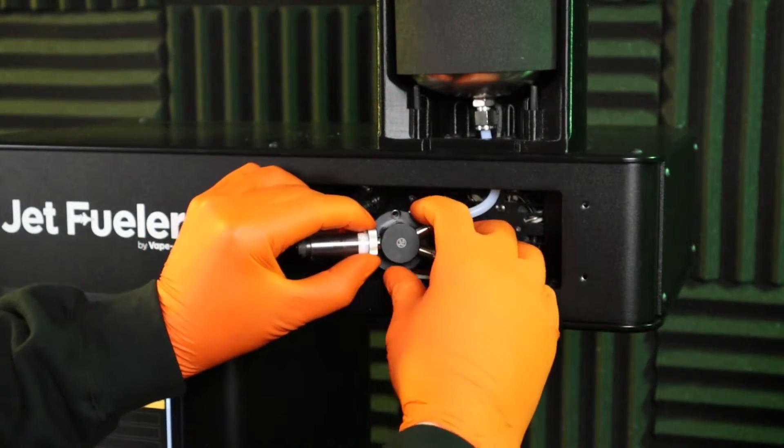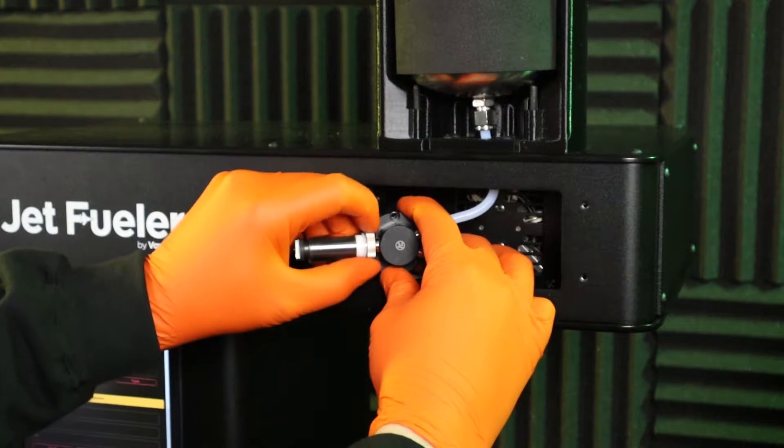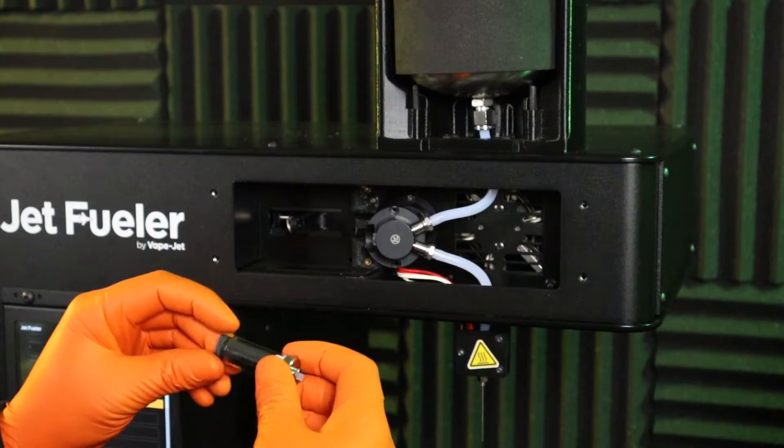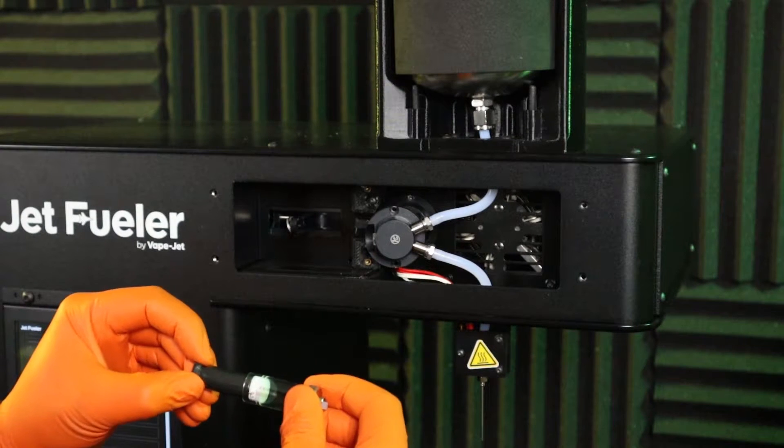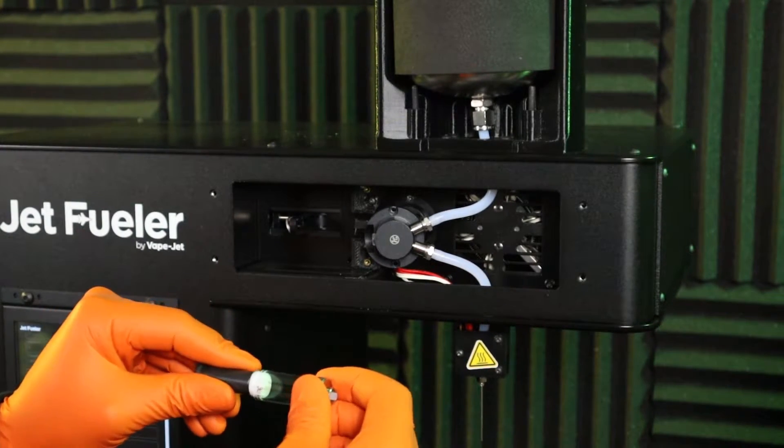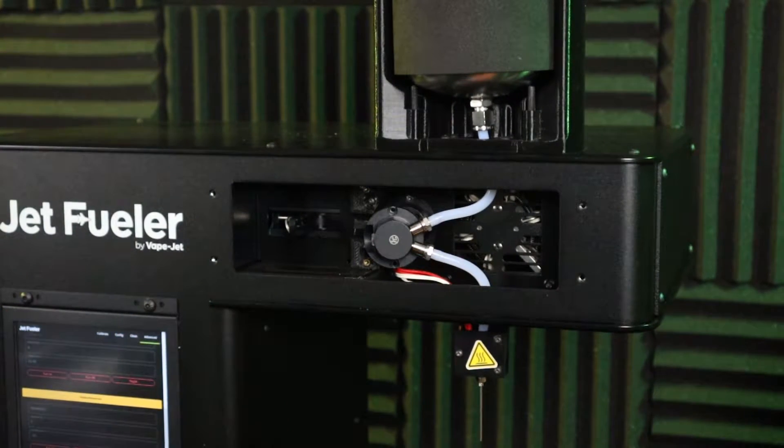Disconnect the syringe from the valve body by rotating counterclockwise when viewed from the plunger end of the syringe. Carefully pull the plunger out of the syringe body and place both pieces into a beaker of 99% isopropyl alcohol.